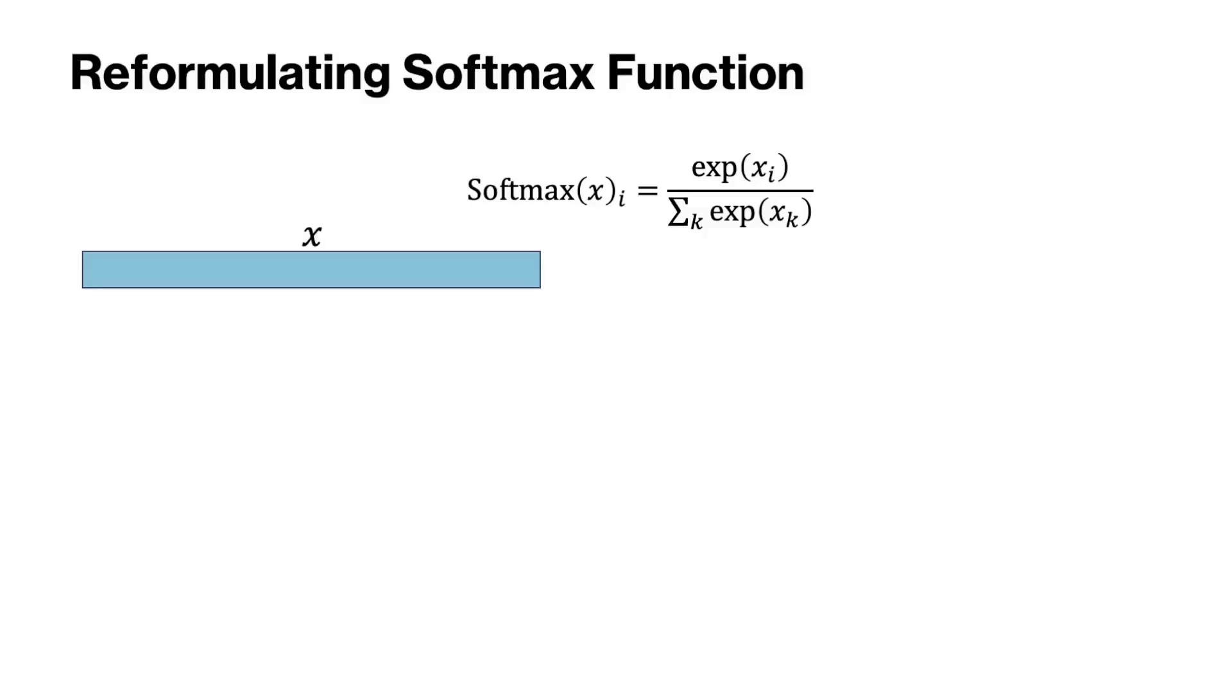First we need to reformulate the softmax equation. Given this vector x, which could be a row of the attention score matrix, we want to compute the softmax. Applying softmax to x results in a vector where each element i is calculated as exp of xi divided by the sum of the exp of all elements. The denominator is the normalization factor. Now if we multiply both sides and the numerator and the denominator by exp of minus m, the results will not change. So let's use m to be the maximum value of the input vector x. This can be further simplified as shown here by merging the two exponential functions.